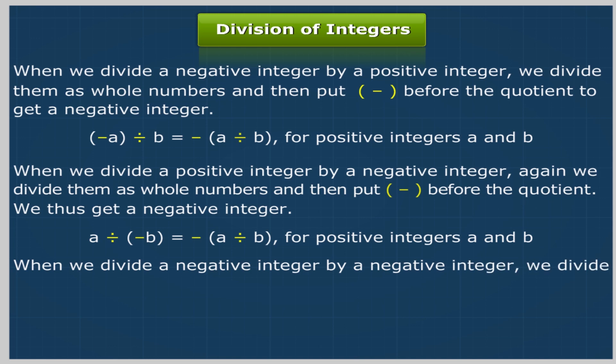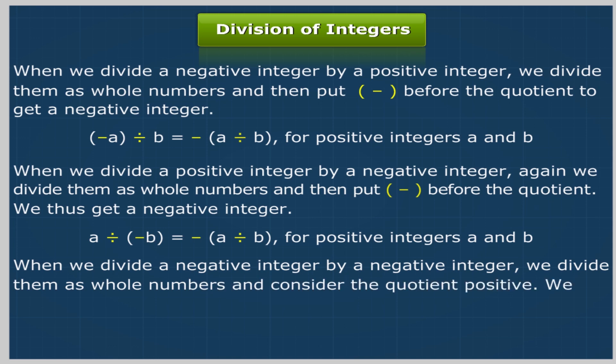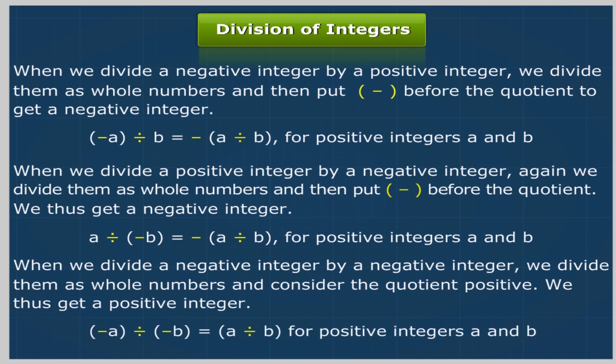When we divide a negative integer by a negative integer, we divide them as whole numbers and consider the quotient positive, giving a positive integer: (−a) ÷ (−b) = a ÷ b for positive integers a and b.